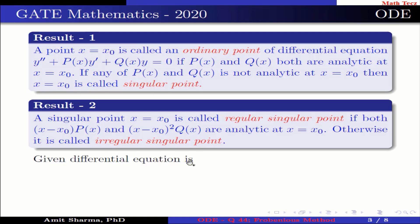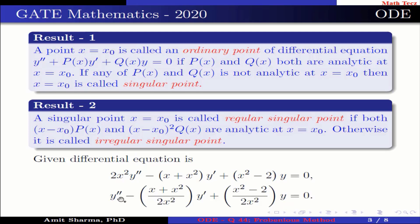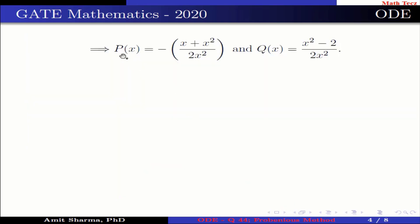The given differential equation is 2x²y'' − (x + x²)y' + (x² − 2)y = 0, which can be rewritten as y'' − [(x + x²)/(2x²)]y' + [(x² − 2)/(2x²)]y = 0. This means p(x) = −(x + x²)/(2x²) and q(x) = (x² − 2)/(2x²). Here p(x) and q(x) are not analytic at x = 0, which implies x = 0 is a singular point.